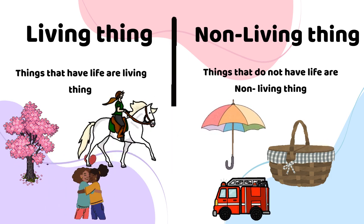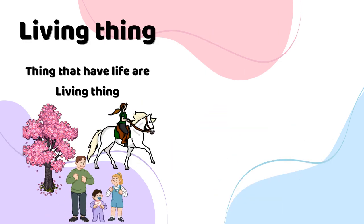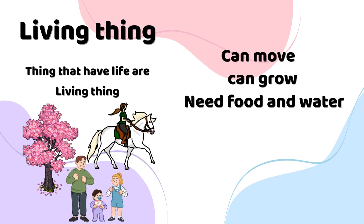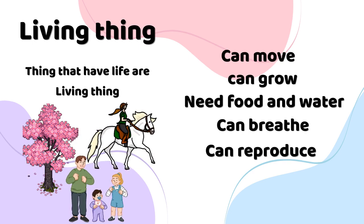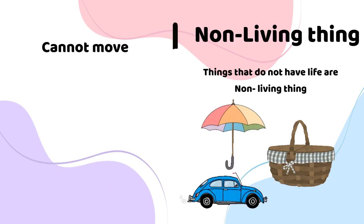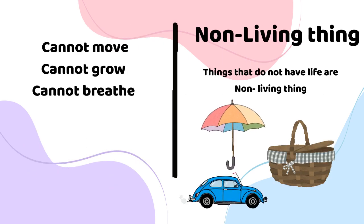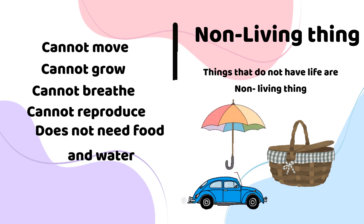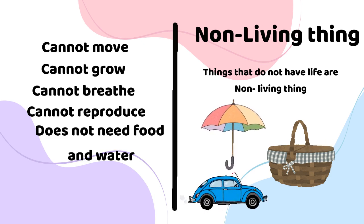Living things can grow, they need food and water, they can breathe and can reproduce. While non-living things cannot move, grow, breathe, or reproduce, and they do not need food and water.